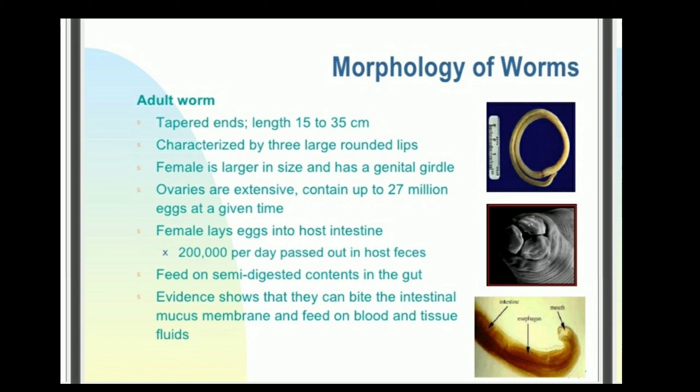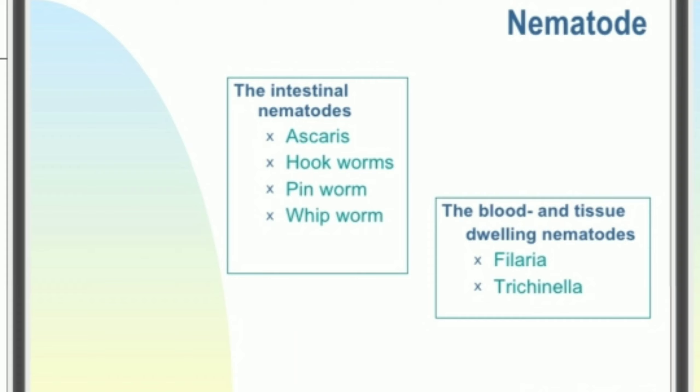It's known as the Ascaris worm. On the left side, adult worm morphology is given, but you don't need to memorize it. On the right side, a figure of the Ascaris worm is shown. There are several types of nematodes which cause disease in human beings: Ascaris, Hookworm, Pinworm, and Whipworm. The blood and tissue dwelling nematodes are Filaria worm and Trichinella worm.